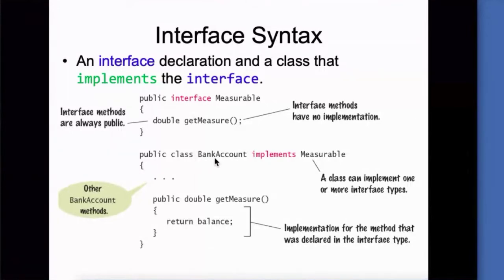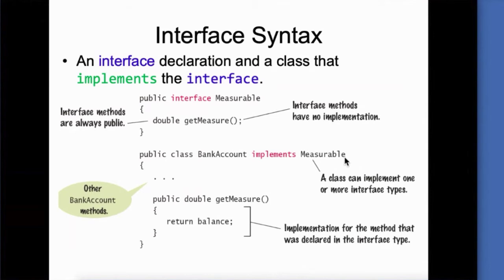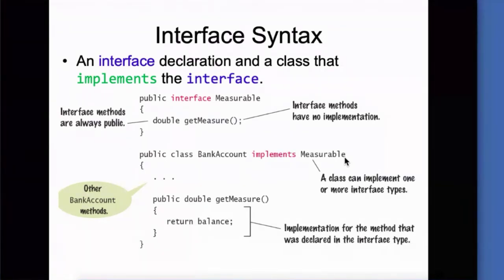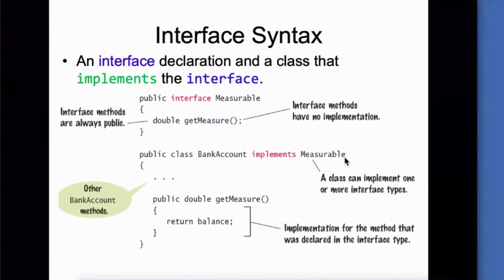So here is one called BankAccount. Notice this is a class, and it uses the keyword implements measurable. You can implement multiple interfaces inside of a class, but you cannot extend more than one superclass.